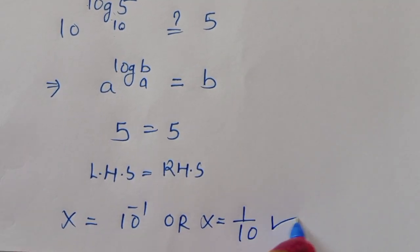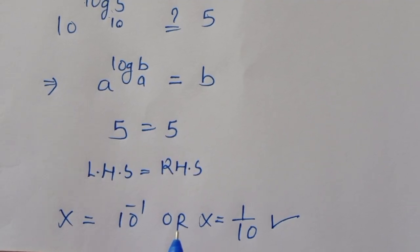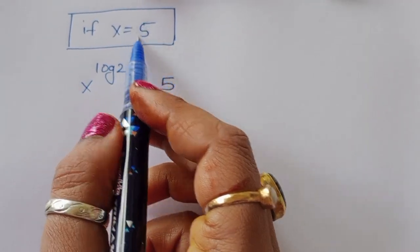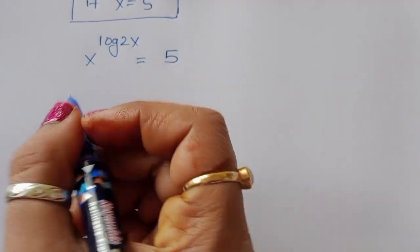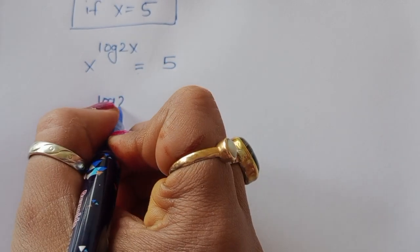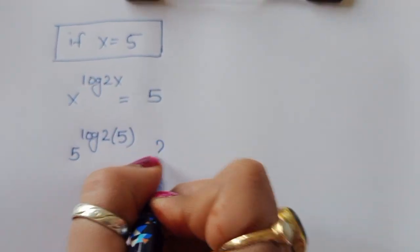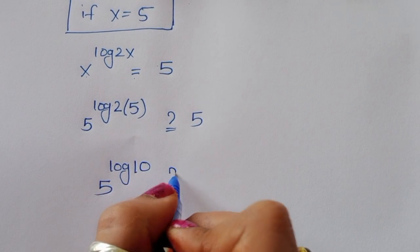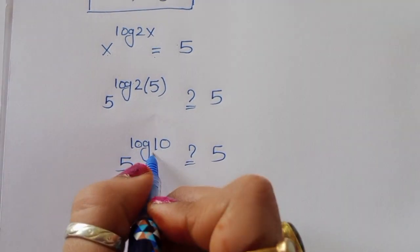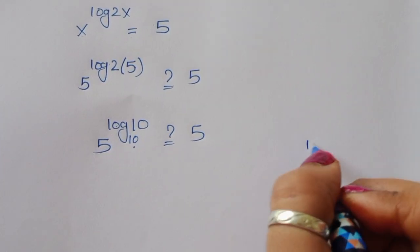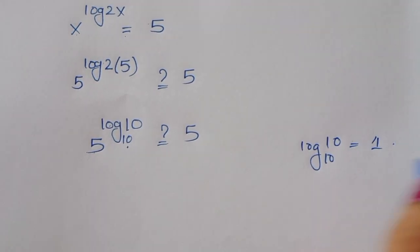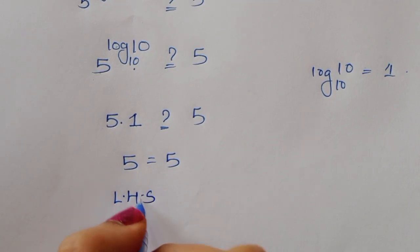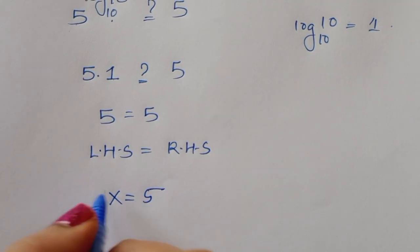Verification for x = 5: substituting into x^(log(2x)), we get 5^(log(2 × 5)) = 5^(log(10)). Since log(10) to base 10 equals 1, this becomes 5^1 = 5. Left hand side equals right hand side, so x = 5 is also a correct solution.